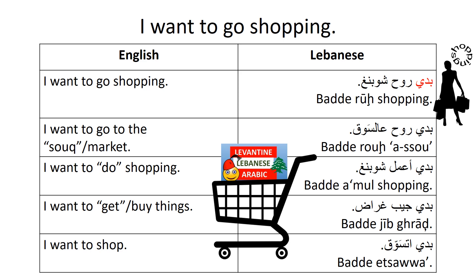Let's start with the first sentence: expressing that you want to go shopping — 'I want to go shopping.' So 'I want' plus 'to go' is 'badi rooh.' Badi rooh shopping. That means 'ana baddi rooh shopping,' but in Arabic you don't have to use the pronoun because it is understood from 'baddi.'